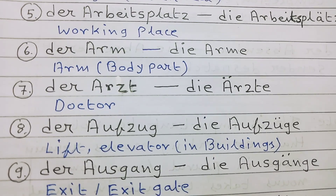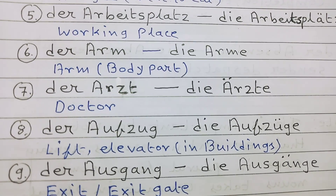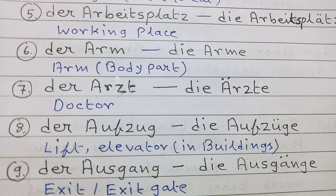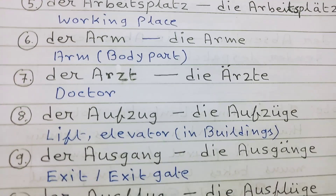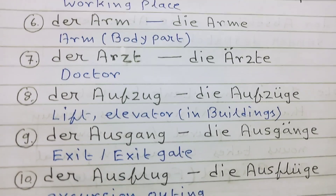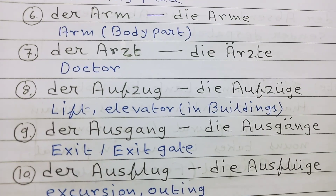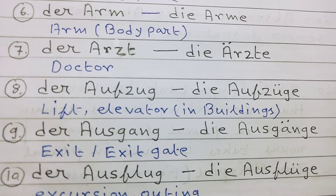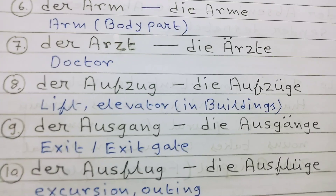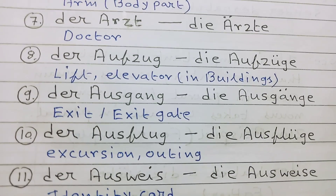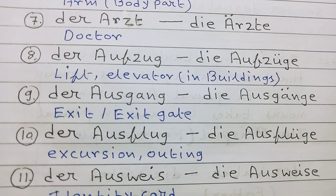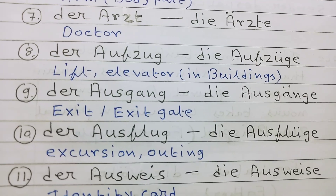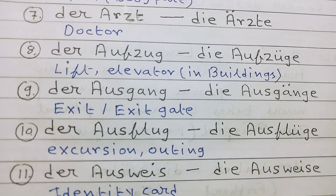Number 8: der Aufzug, die Aufzüge — lift or elevator in buildings. Number 9: der Ausgang, die Ausgänge — exit or exit gate. Number 10: der Ausflug, die Ausflüge — excursion, outing.